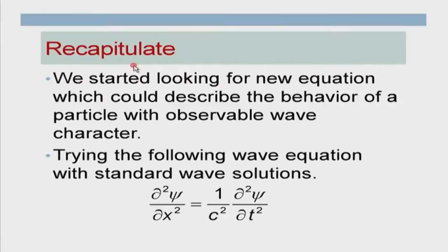Then we started looking at new equations which can describe the behavior of a particle which has an observable wave character. We started trying this particular equation which is generally known as a wave equation. Electromagnetic waves satisfy this particular equation, so we said let us try to look at this equation and see whether this can work for us.